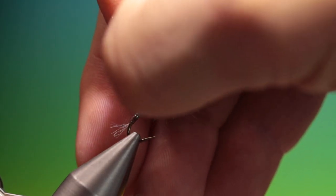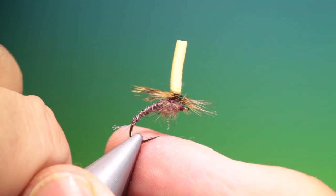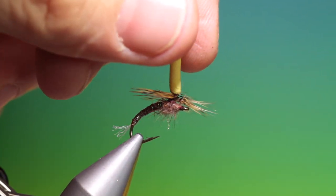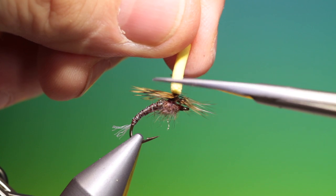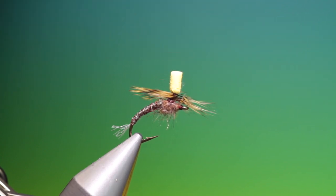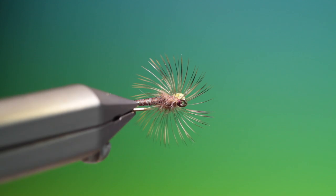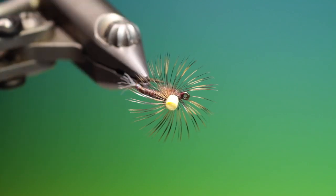Turn it around. And we can take the post down to the size that we want. And that's the finished foam post March brown.